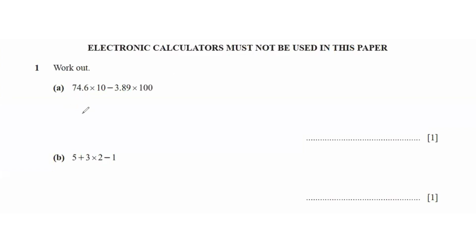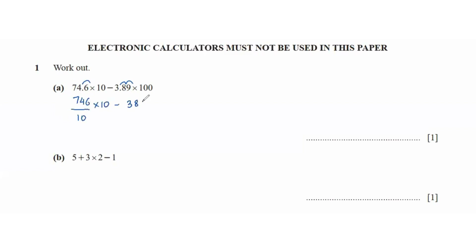In the first question, work out 74.6 times 10 minus 3.89 times 100. We start by converting the decimals into fractions. We move the decimal one place to the right for 74.6 and two places to the right for 3.89. So that's going to be 746 over 10 times 10 minus 389 over 100 times 100.